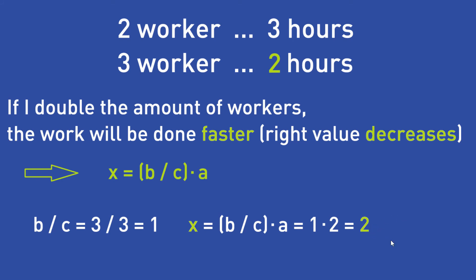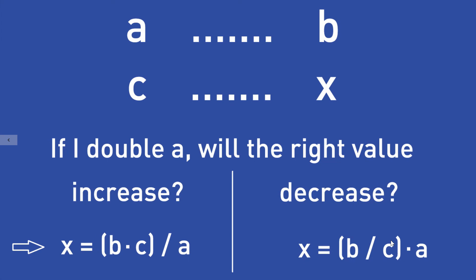Now you should know how to solve text problems using the rule of 3. To summarize: the first thing you do is read your text problem and write it down identifying the known values A, B, C and the unknown value X. Then ask yourself: when I double this number, will the right number increase or decrease?